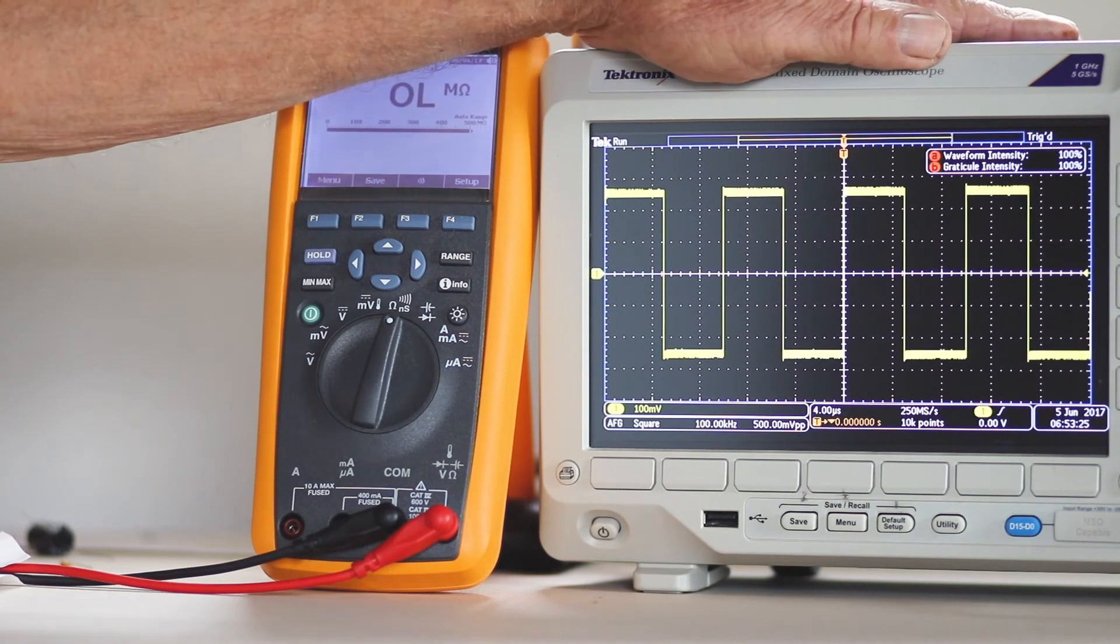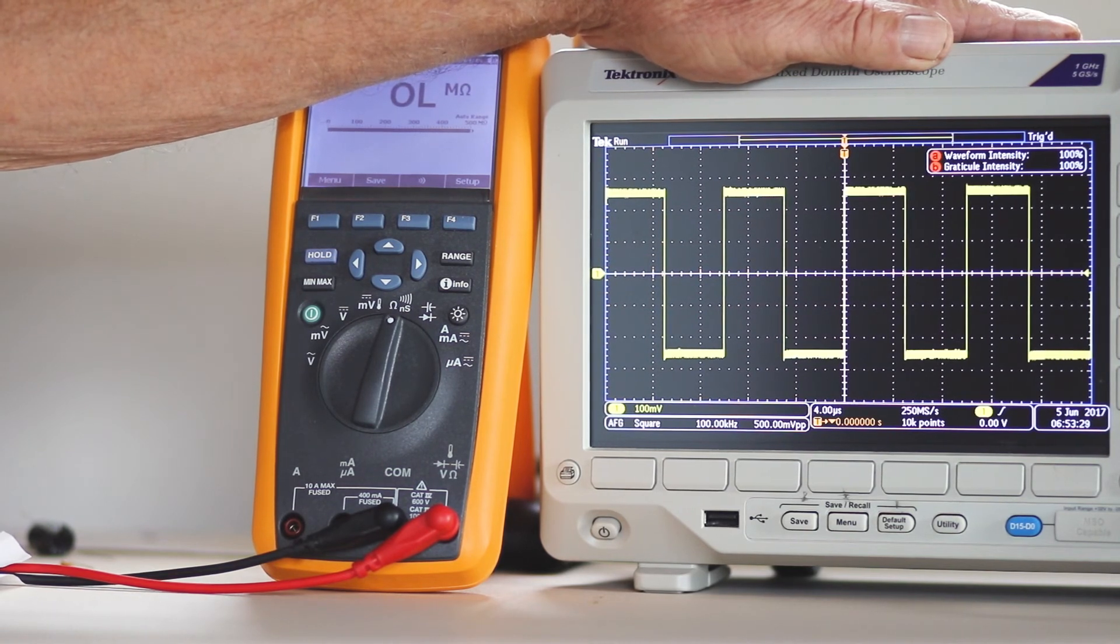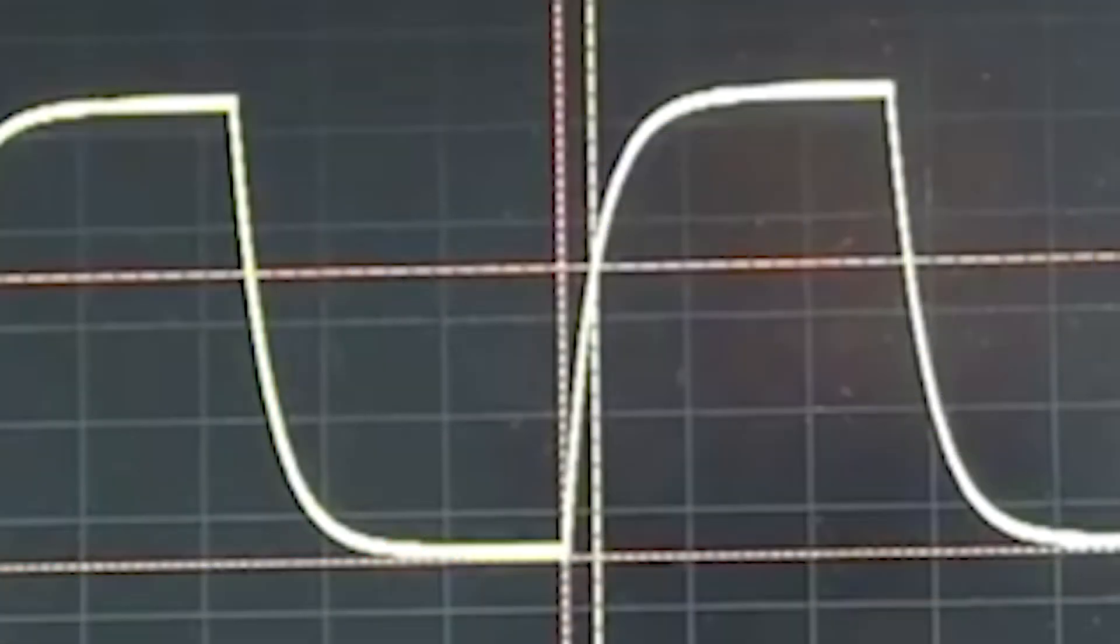The oscilloscope can likewise be used to measure a capacitance. To do this, a square wave from an arbitrary function generator is applied to a known resistance, in series with the unknown capacitance. Use cursors to find the elapsed time.